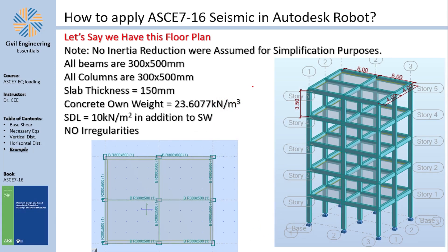In this video we are going to do a hand calculation for a simplified structure. I want to show you that Autodesk Robot is perfectly able to do everything for you, because this is going to be a comparative lecture. My structure is a five-story building — the bay width in the x-axis is five meters, the bay width in the y-axis is four meters, and the story height is 3.5 meters.